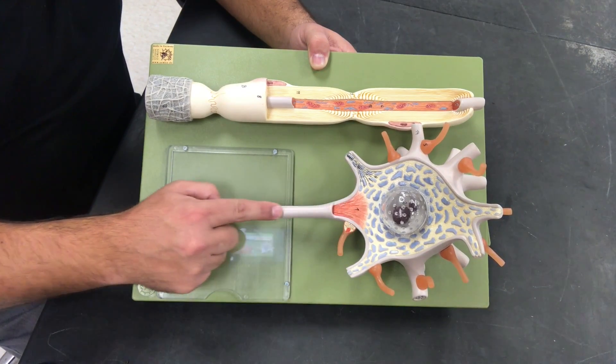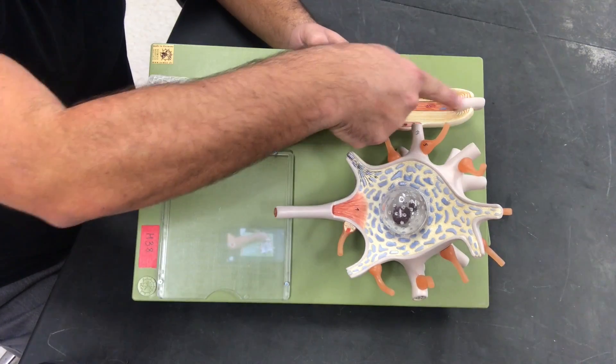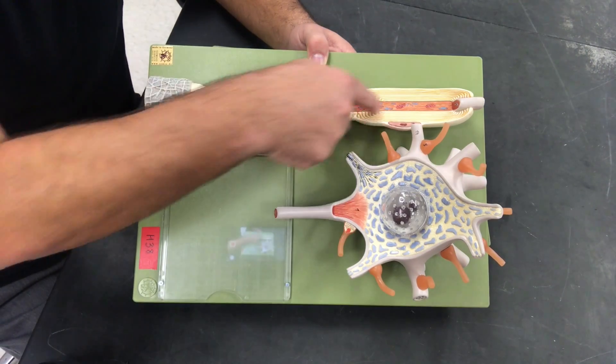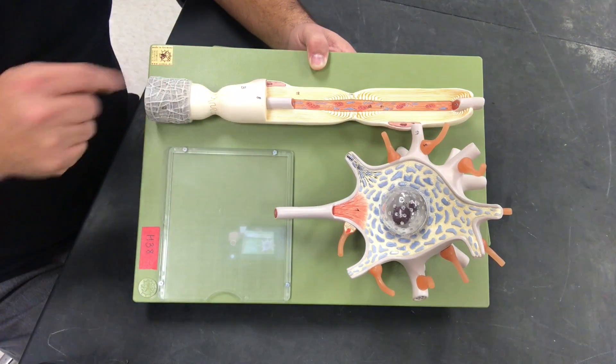Coming off the axon hillock, we have our dendrite and we see it here extending through this portion of our axon, so again our axon is going to extend the length of this portion.